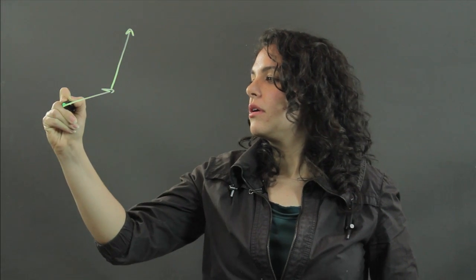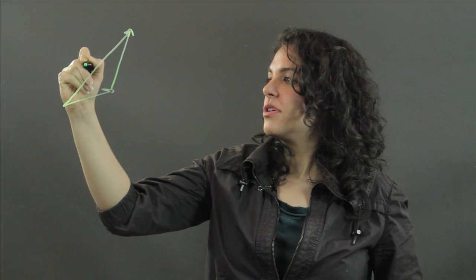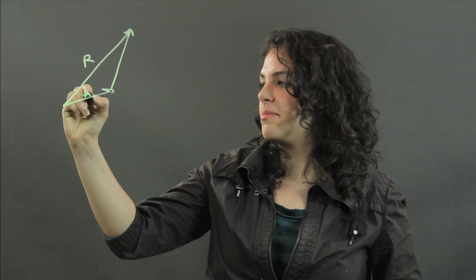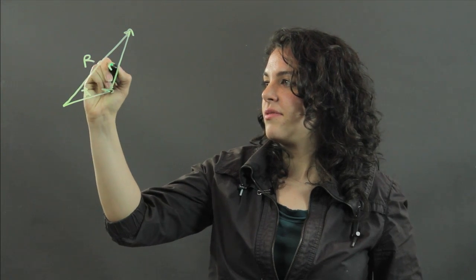The resultant vector comes from adding two vectors. So this would be my resultant vector. This would be maybe vector a, and this is vector b.